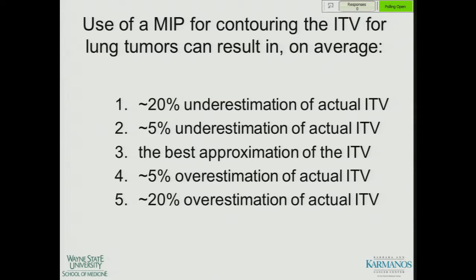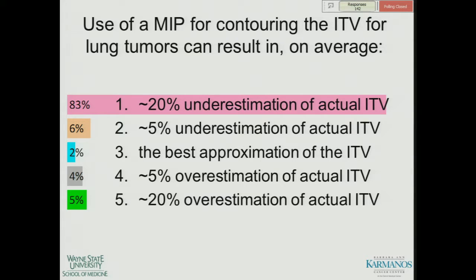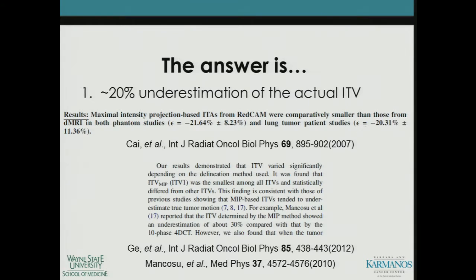That brings us to our second SAM question: use of MIP for contouring the ITV for lung tumors can result in, on average, about a 20% underestimation of the actual ITV; about a 5% underestimation; it is the best approximation of the ITV; about a 5% overestimation; or about a 20% overestimation. The answer is number one — about 20% underestimation. Another publication in MedPhys actually showed about a 30% underestimation when using MIP.